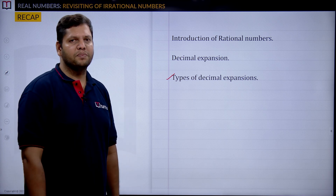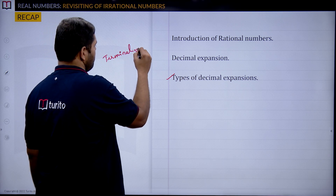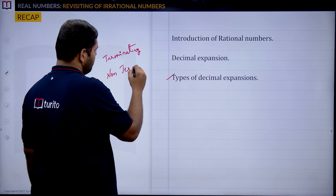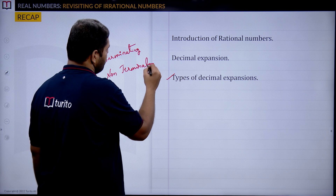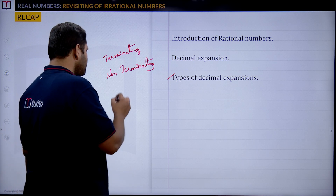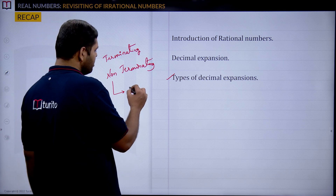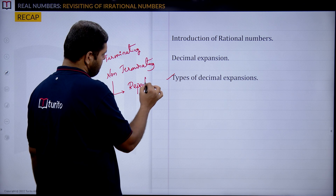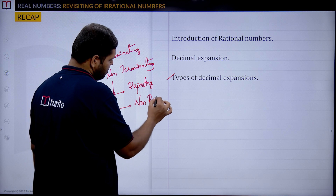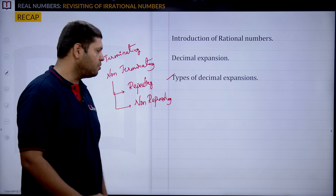Generally, we have exactly two types of decimal expansions. One is terminating decimal expansion, and another is non-terminating decimal expansion. Under non-terminating, we have again exactly two types: first one is non-terminating repeating, and second one is non-terminating non-repeating.